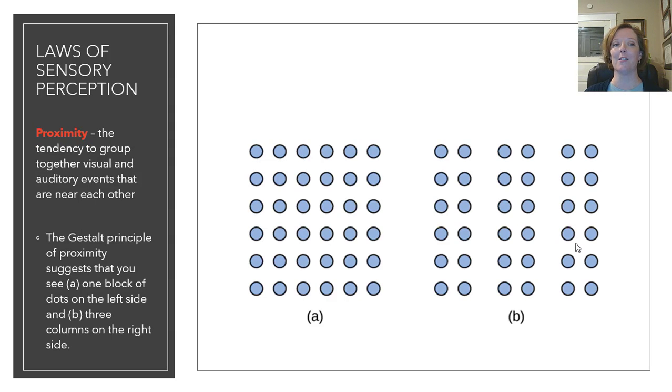The next Gestalt Law is proximity. This is the tendency to group together visual and auditory events that are near each other. So, when you think about auditory events, you don't hear music usually as individual instruments playing. You can usually pick them out, but usually the way that they come together is what we are hearing. We're hearing it as music, not just random sounds. The Gestalt principle of proximity suggests in this picture that you either see a block of dots on the left or three columns on the right. Even though they're the same amount of dots, the way they are arranged, their proximity to each other, is going to influence how we see the dots.